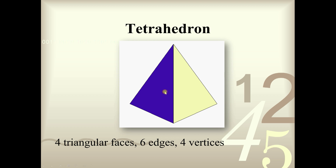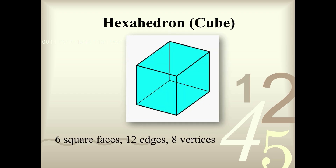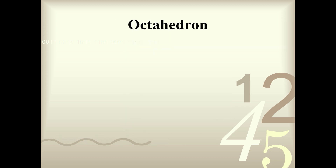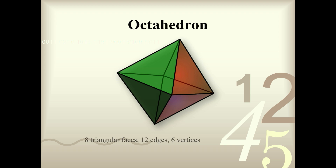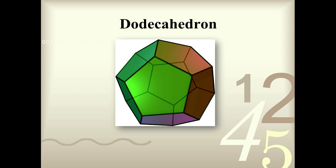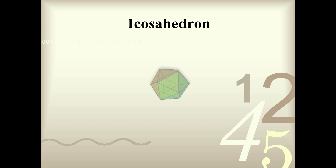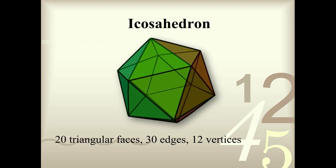The next one is called the hexahedron. The word hexahedron means six because a cube consists of six square faces. The next one is called an octahedron — octa means eight in Greek, so this figure consists of eight equilateral triangles. Then we have a dodecahedron — dodeca means 12 in Greek, and it consists of 12 pentagonal faces. And the icosahedron consists of 20 triangular faces — hence the word icosa in Greek, meaning 20.